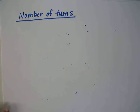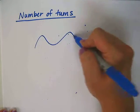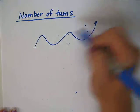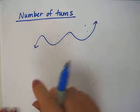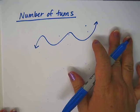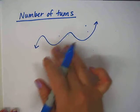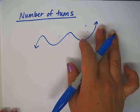The number of turns. Polynomial functions are smooth, nice, continuous graphs from negative infinity to positive infinity, but often there are turns in the graph.